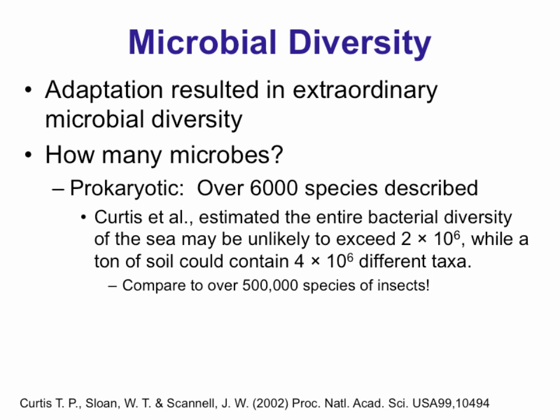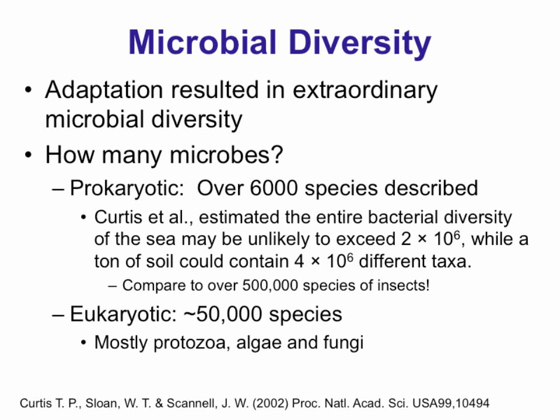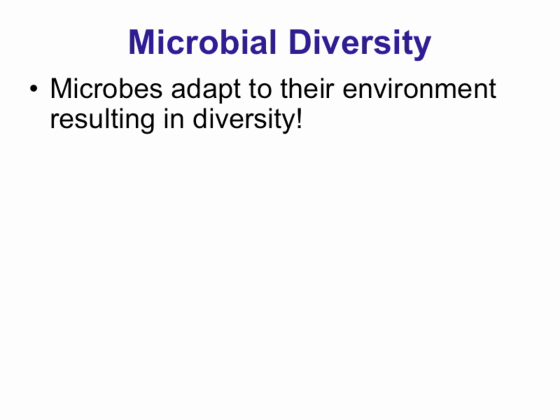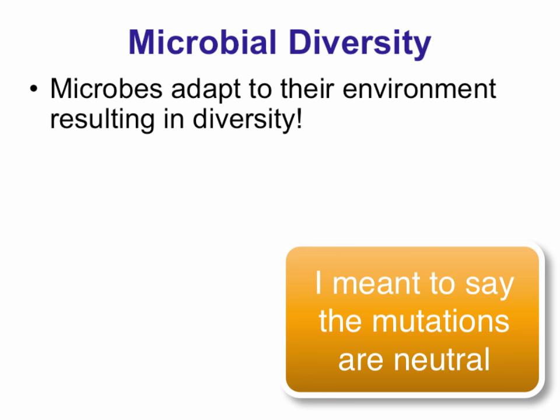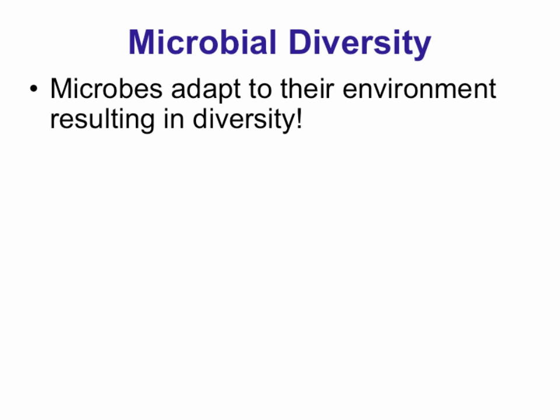Compare that with 500,000 insect species, which is considered very diverse for animals. The diversity in eukaryotic microbes is about 50,000, so bacterial and archaeal diversity overshadows the diversity of eukaryotes by a lot. Because of their high rate of mutation and short generation time, microbes gain mutations rapidly. Most of those mutations are non-beneficial, but once there is a selective pressure, organisms with better fitness survive and eventually differentiate into new species, generating a lot of diversity.